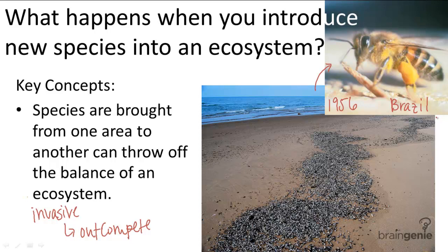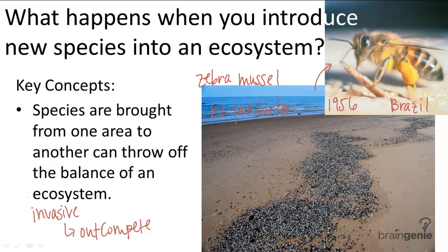The zebra mussel is an example of an invasive species. These were discovered in a lake in Detroit in 1988, when they were found to have clogged up the water pipes that carry water into the city. Although their exact origins aren't certain, scientists speculate that they were carried over on the underside of some type of ship. Because the zebra mussel has no local predator, its population exploded and went wild, multiplying to grand proportions and causing millions of dollars of damage.